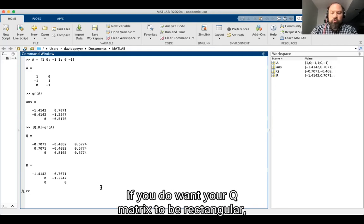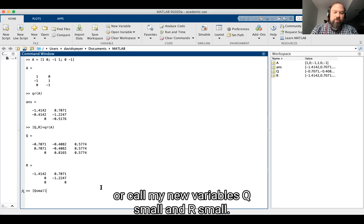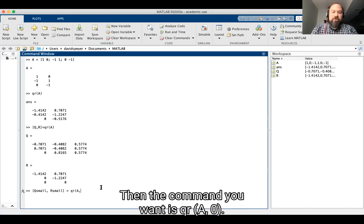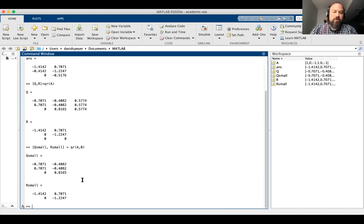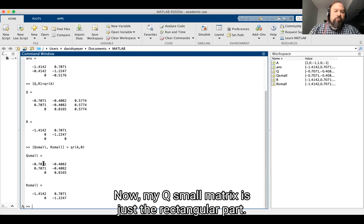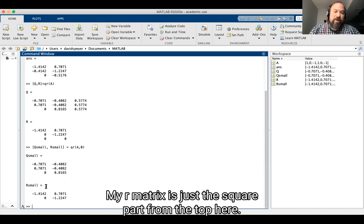If you do want your Q matrix to be rectangular, I'll call my new variables Q small and R small. I'll store Q. Then the command you want is QR A comma zero. Now, my Q small matrix is just a rectangular part. And my R matrix is just a square part from the top here.